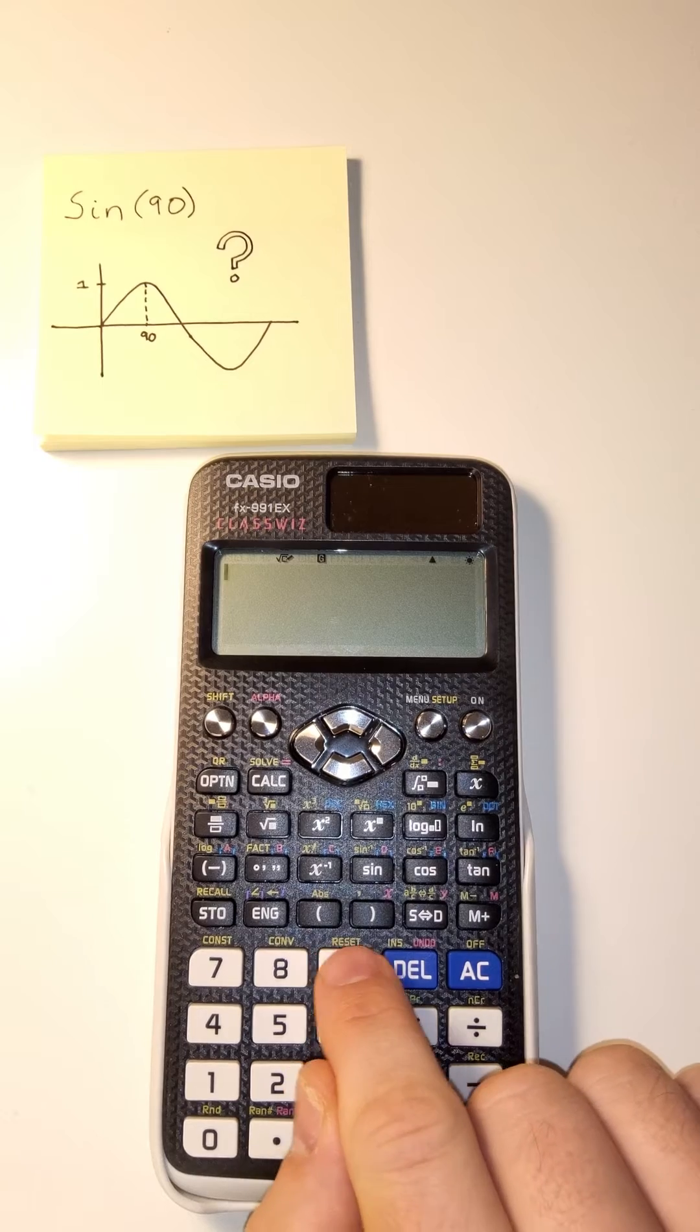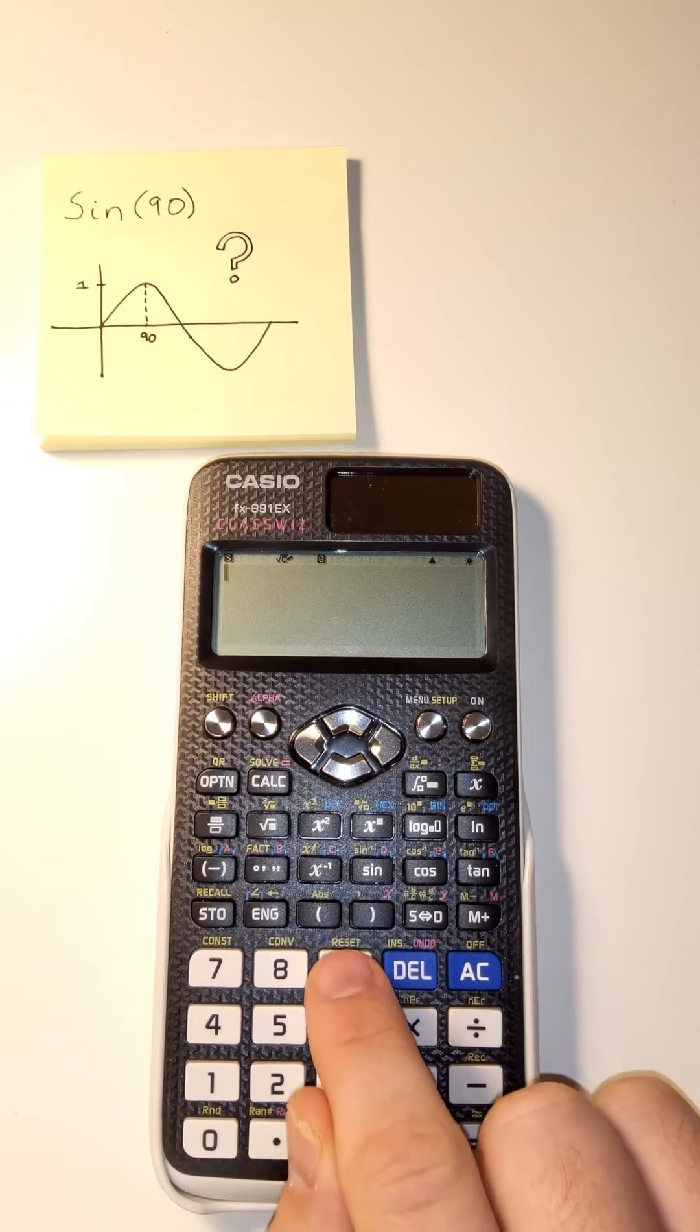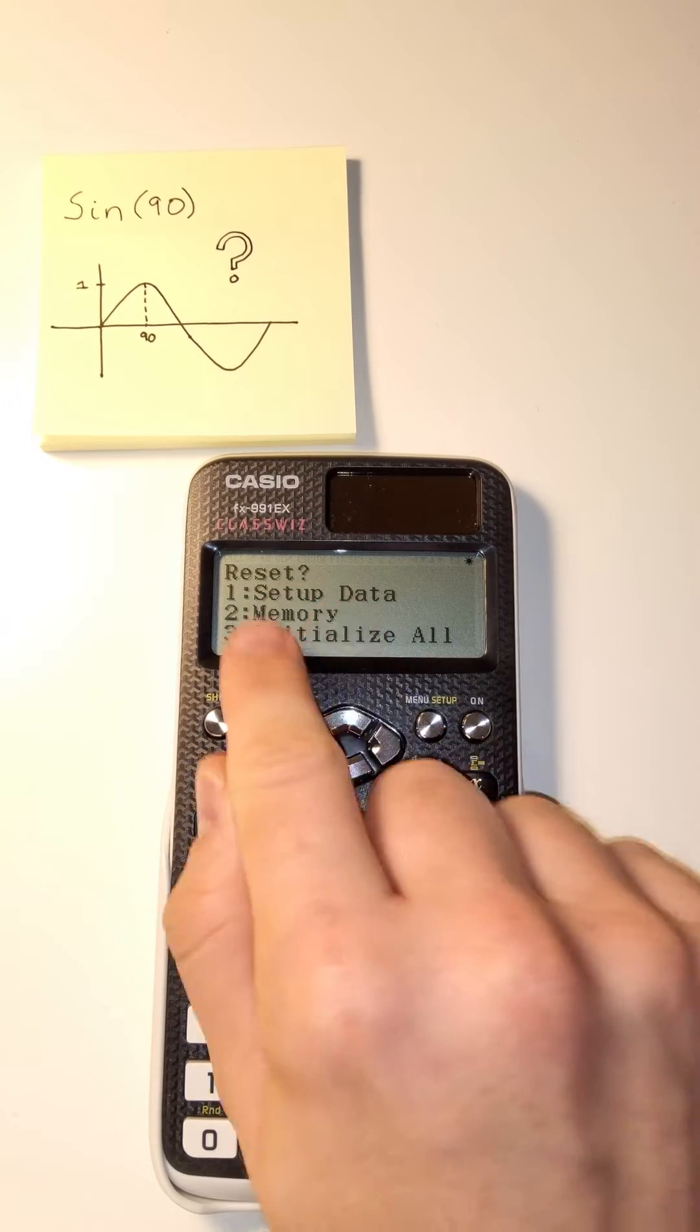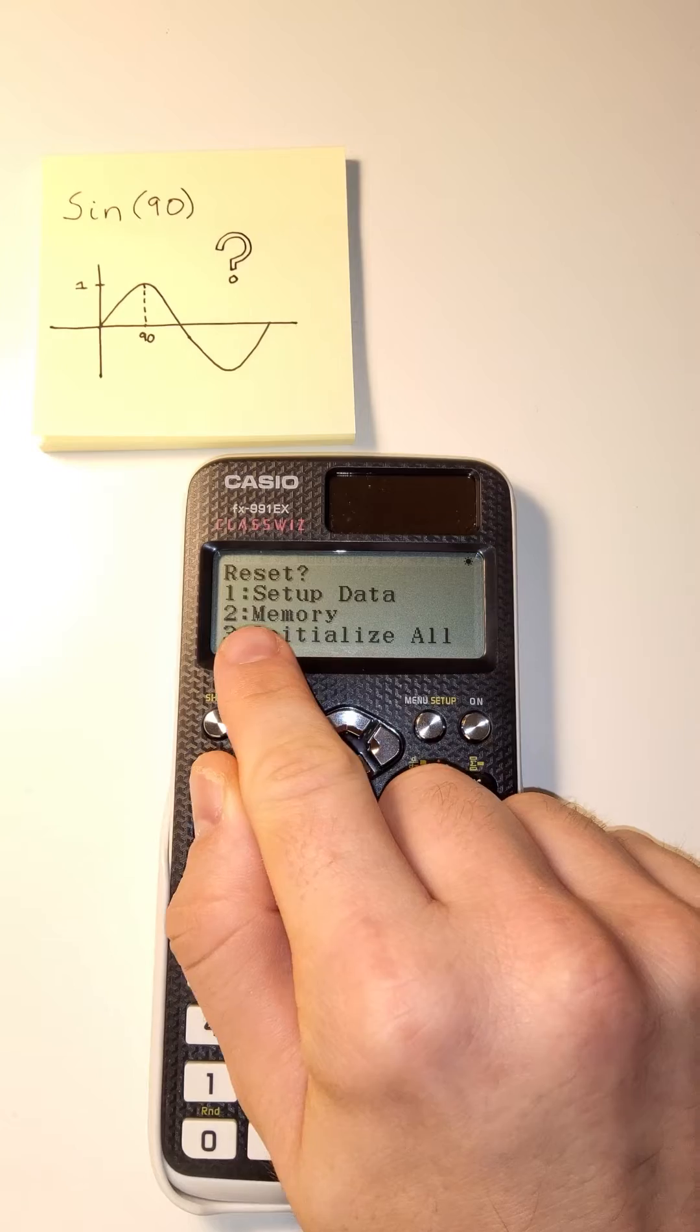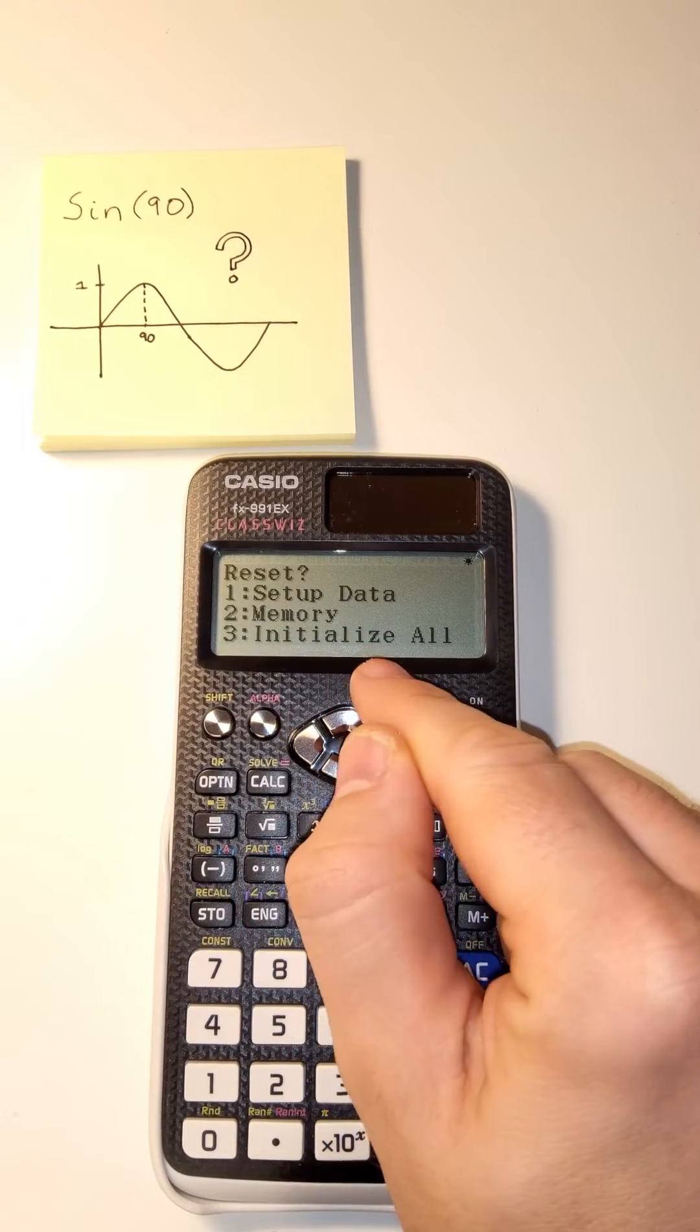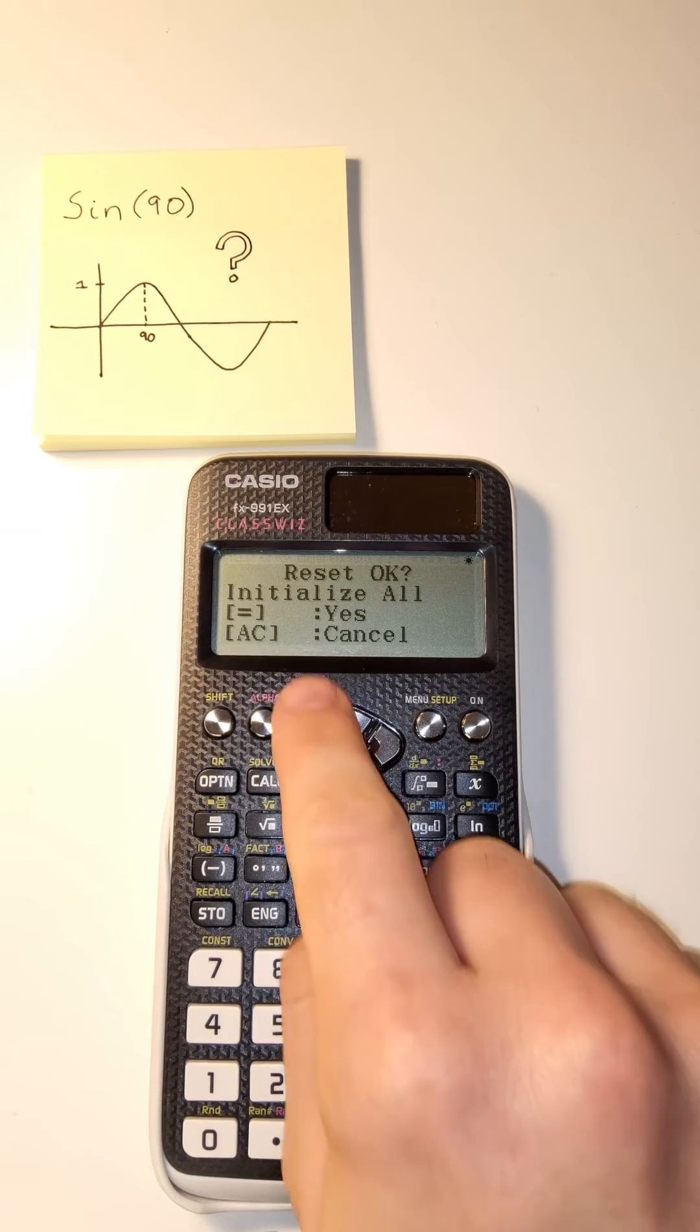And we're going to note the color is yellow. So we're going to shift to get to the yellows. We're going to reset. We're going to have a nice menu. We'll just use our common sense, right? The setup data, the memory, or initialize all. I think we're going to go for all, because I don't want to take any chances. We'll press three.